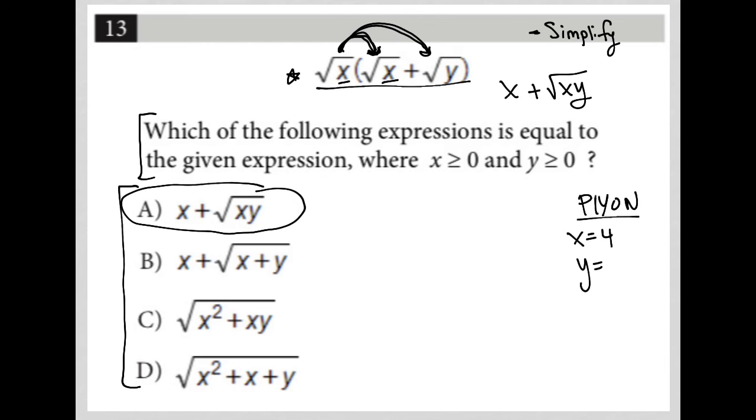And I'm going to say y is 9 for the exact same reason. I'd rather have a perfect square. So that would make my question turn into root 4, parentheses, square root 4 plus square root 9.